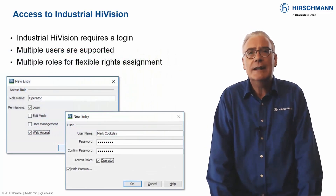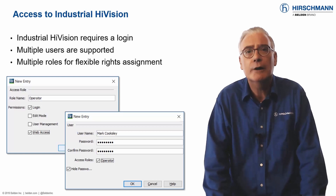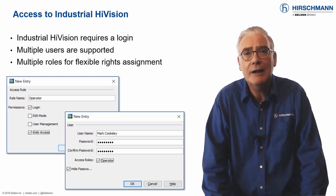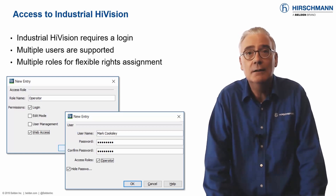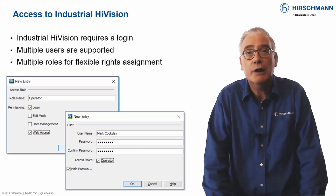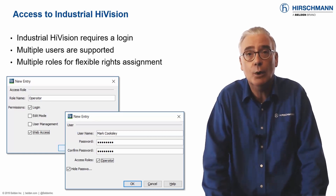Industrial HiVision is a powerful tool for network configuration, supervision, and reporting. Therefore, user accounts and permissions must be tailored to suit your security requirements.